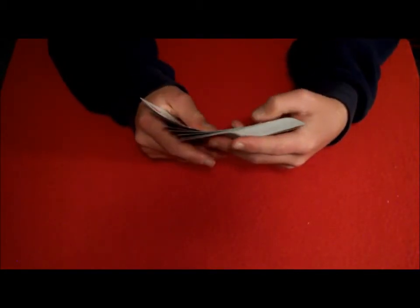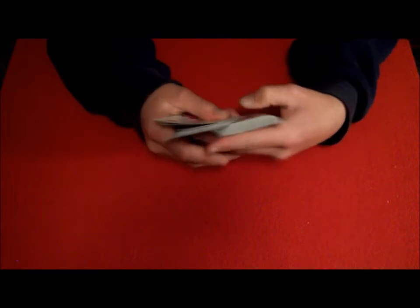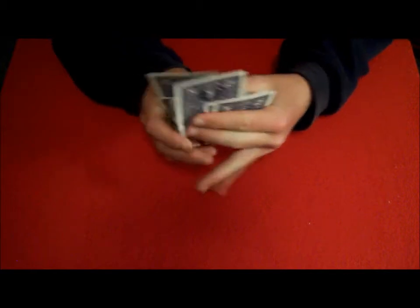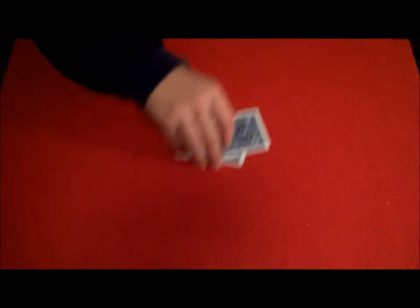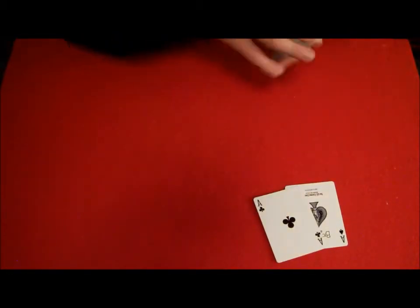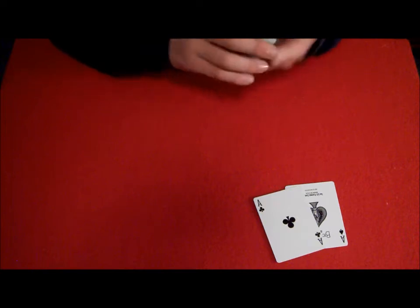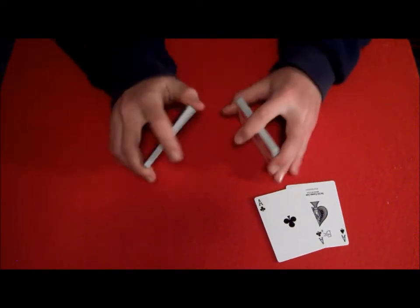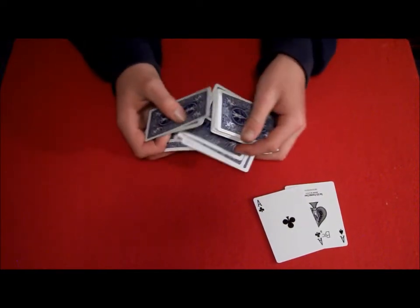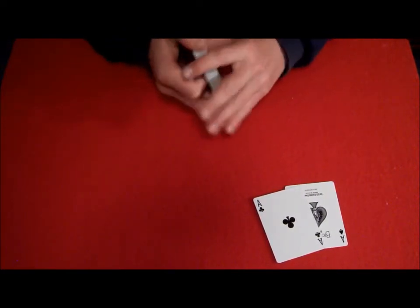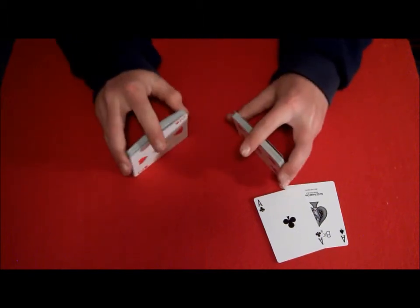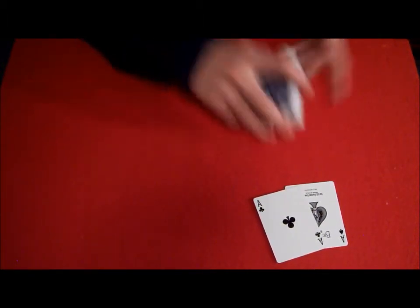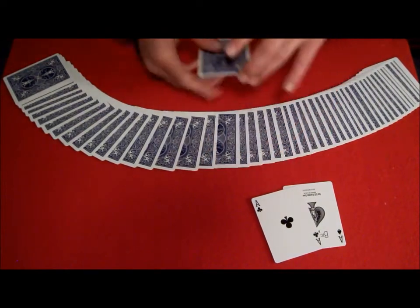So what I need is the help of the two aces, two black aces. We're going to leave them right there. And then what I want you to do is just select any card. How about this one right here.